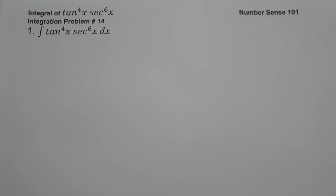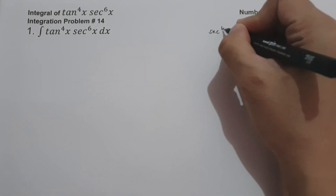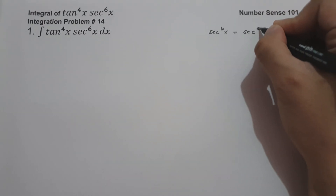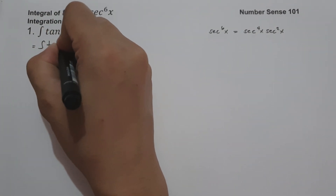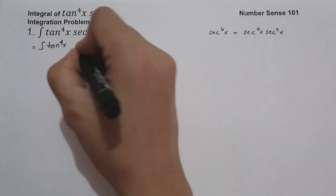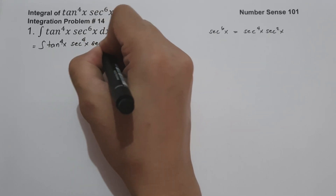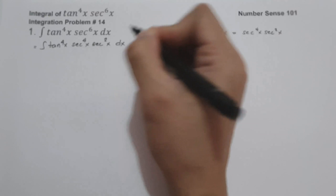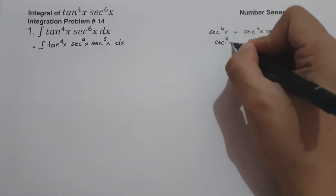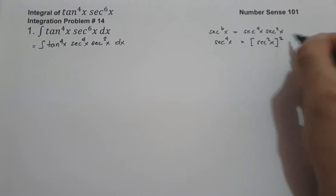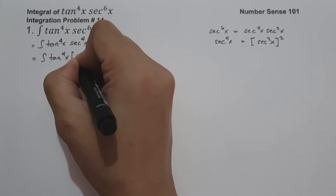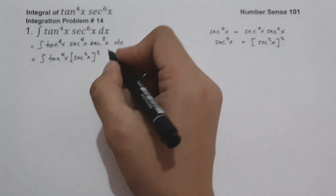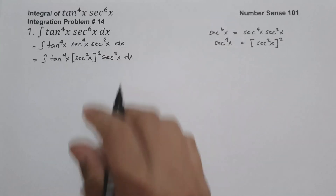What technique or strategy are we going to use to simplify this expression? The first step is to rewrite sec⁶(x) as sec⁴(x) · sec²(x). So the antiderivative becomes tan⁴(x) · sec⁴(x) · sec²(x) dx. We then rewrite sec⁴(x) as (sec²(x))², giving us tan⁴(x) · (sec²(x))² · sec²(x) dx.